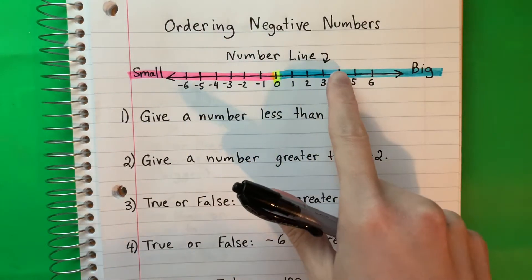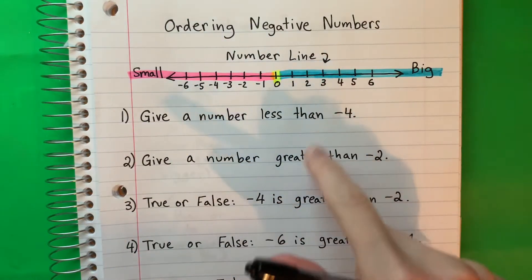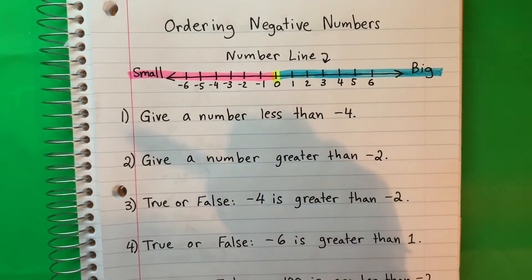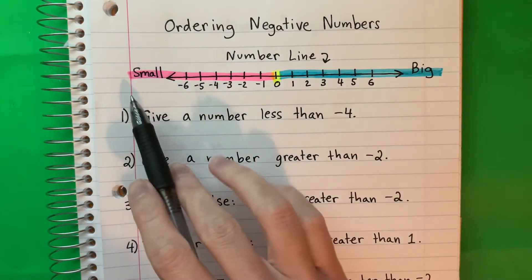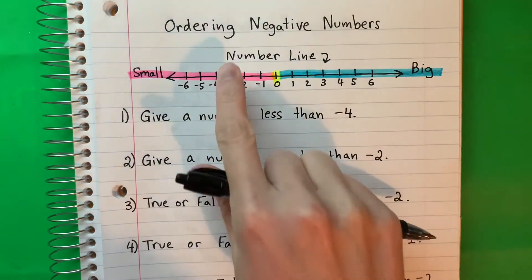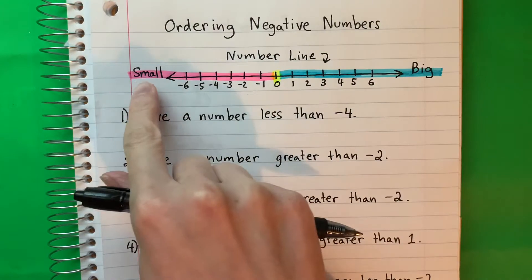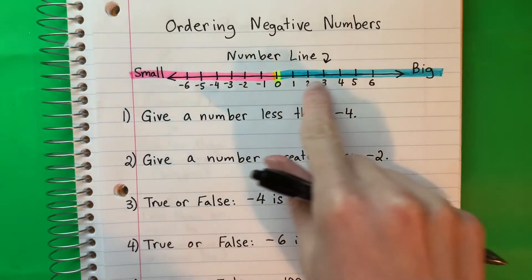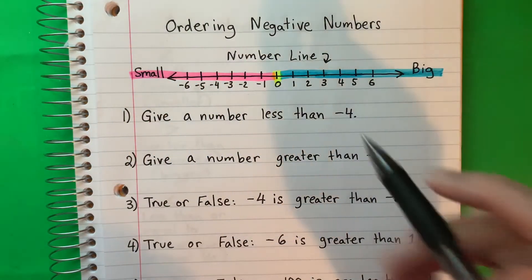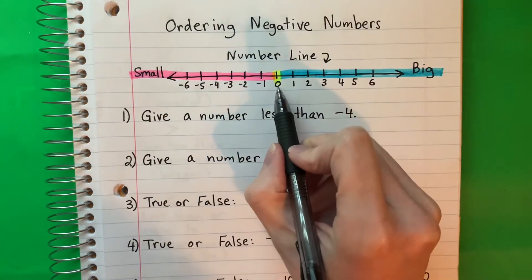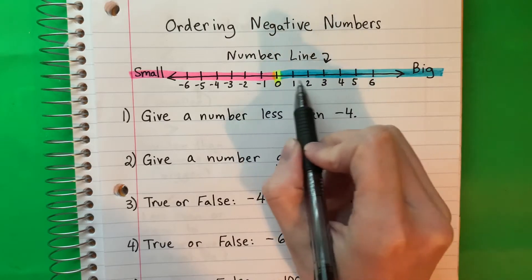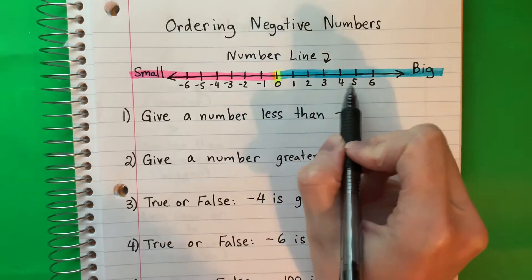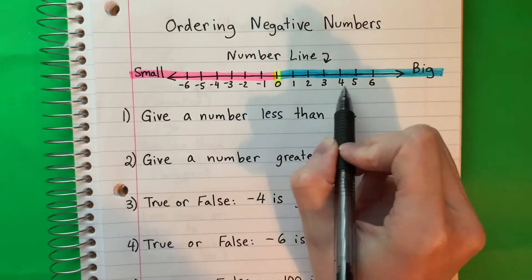Ordering negative numbers. ¿Cómo ordenar números negativos? So in this one, we're going to go ahead and look at a number line. This is a number line. In the middle is zero, and then from zero to the right are positive numbers.